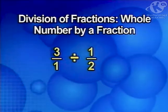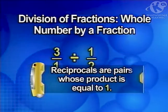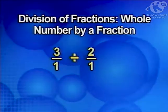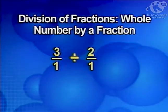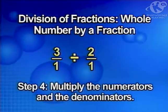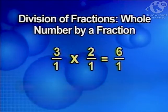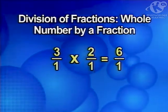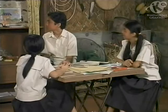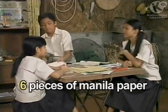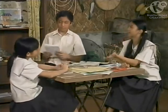What is a reciprocal? Reciprocals are pairs whose product is equal to one. The reciprocal of one-half is two over one, because if we multiply one-half by two over one, their product is one. Now we can multiply: three times two is six, one times one is one, so the answer is six over one. There will be six pieces of manila paper. That means each of us will get two — one for the map and the other for our important notes.